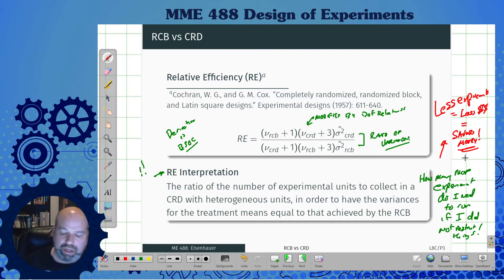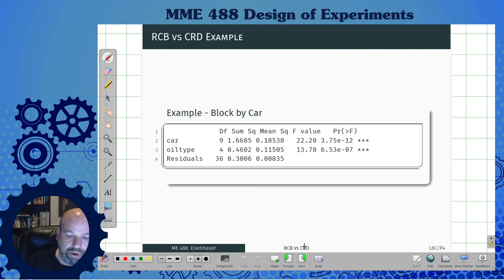Let's do an example. I blocked it by car this time. Here's my oil type. I expect that F value to be pretty high. This was my block.